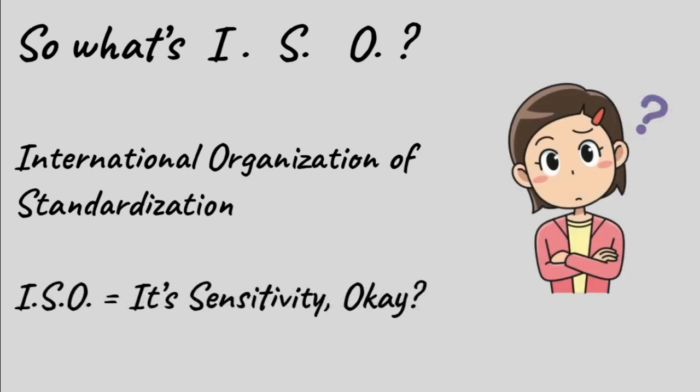Well, I often joke around and say ISO is short for its sensitivity, okay? So what does it do? Well, ISO controls the sensitivity of your camera's sensor to light. Okay, let me explain.